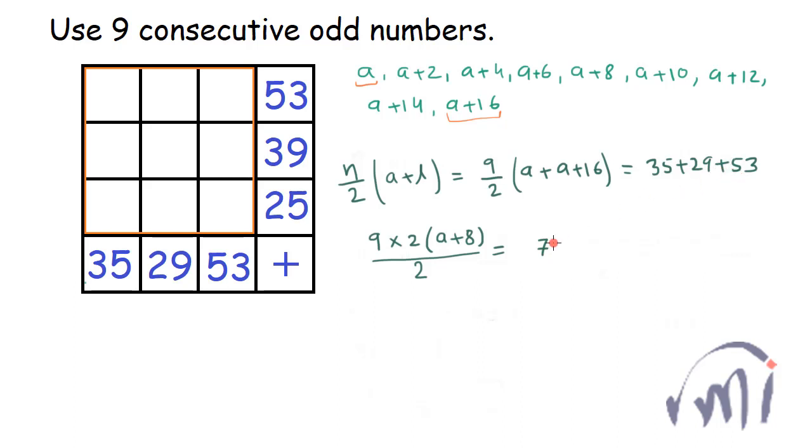So this 2 will cancel this 2, and from here I'll have A plus 8 is equal to 117 divided by 9, which is equal to 13. Or from here you can say A is equal to 13 minus 8, that is 5.